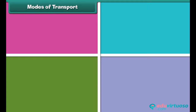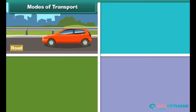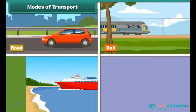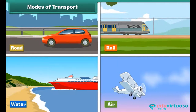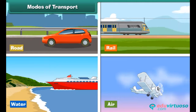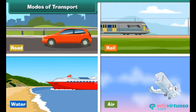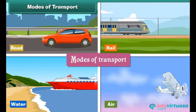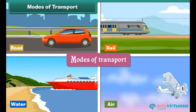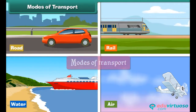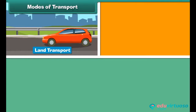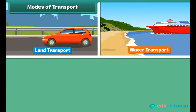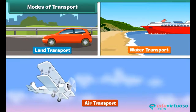Modes of transport. Goods, animals, and people can be transported by road, rail, water, or air. Different mediums used for transportation are known as the modes of transport. Modes of transport can be broadly divided into three categories: land transport, water transport, and air transport.